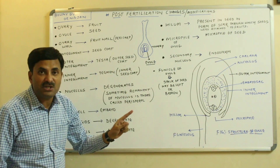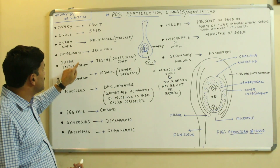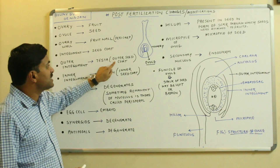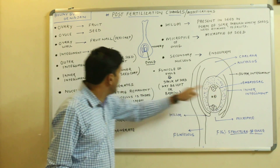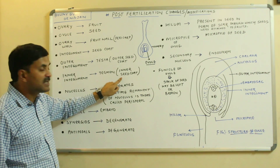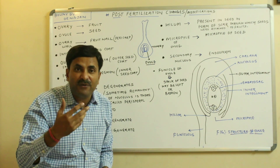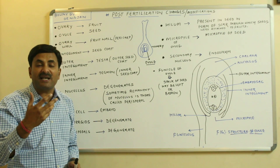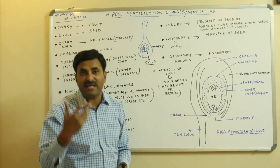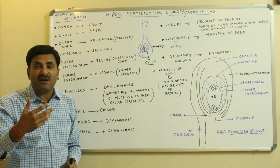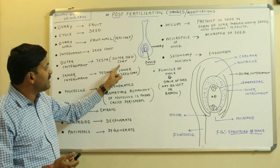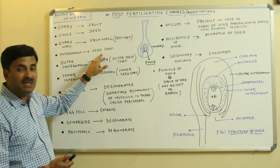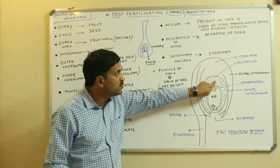A bitegmic ovule consists of two integuments — outer and inner. After fertilization, when the ovule is converted into seed, the outer integument forms the testa, which is the outer seed coat, and the inner integument forms the tegmen, which is the inner seed coat. So altogether, integuments form the seed coat after fertilization.